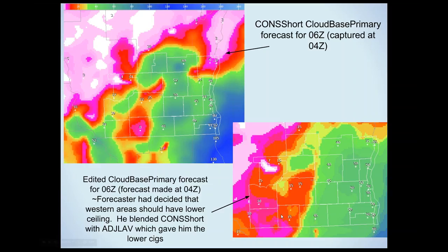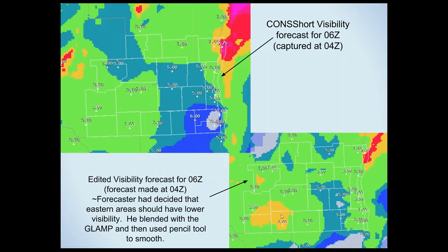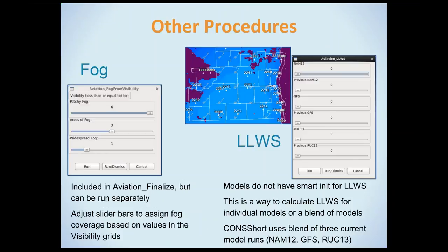Similarly with visibility, the forecaster saw visibility should probably be lower along the lake than CONSHORT was giving, and blended it with GLAMP, using the pencil tool a bit to get it where he wanted. Most of our edits occur in the first 6 hours of the TAF period. In the outer periods we let CONSHORT take over, and verification shows it does pretty well in those instances. Low-level wind shear is included in your grids but we often don't have to deal with it — it occurs in low-level jet cases. CONSHORT picks it up when models agree.